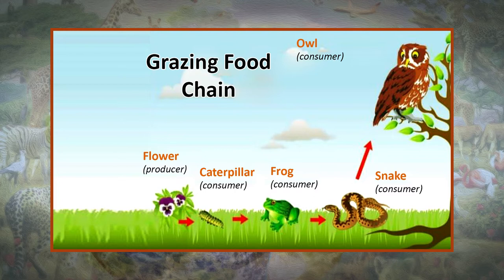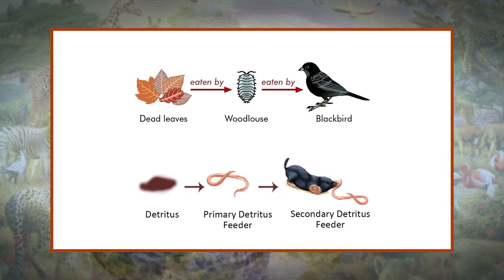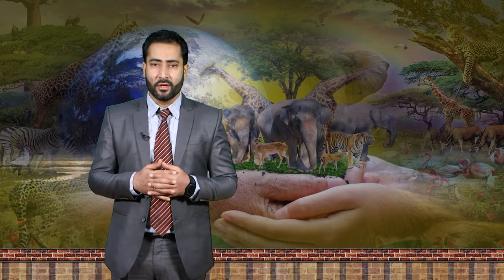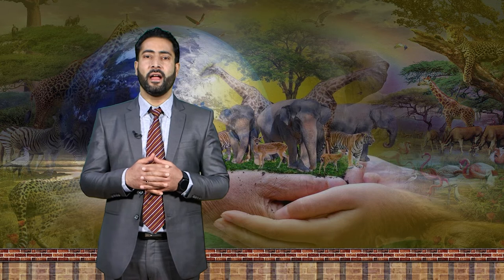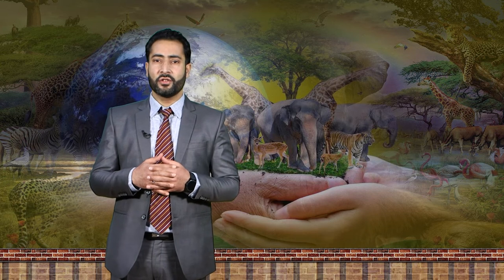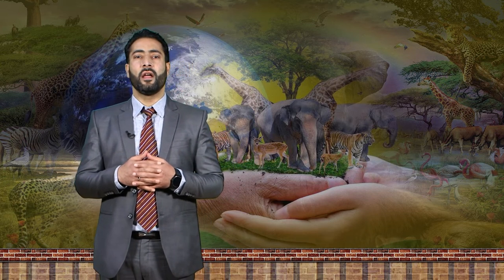For example: grass is the producer, goat is the primary consumer, and man is the secondary consumer. Number two, the detritus food chain passes consumers going from producer to reducer. When dead organic matter becomes the starting point of a food chain, it is called the detritus food chain. The decomposers — fungi and bacteria — feed on the organic matter to meet their energy requirements, and their digestive enzymes help break down organic matter into inorganic materials.